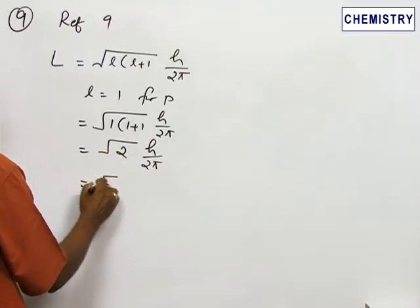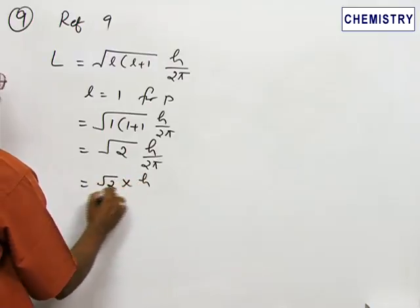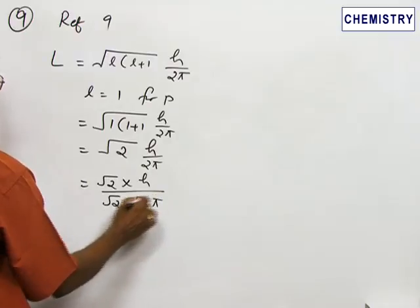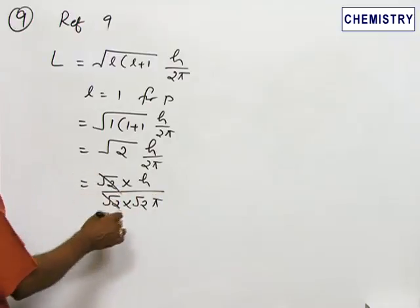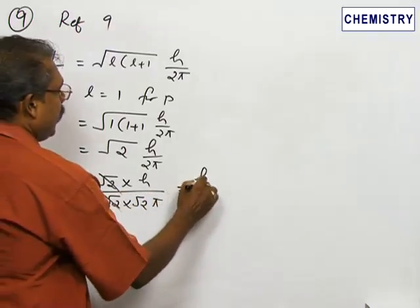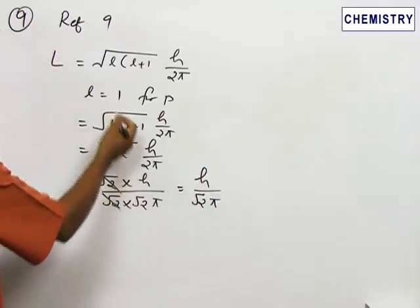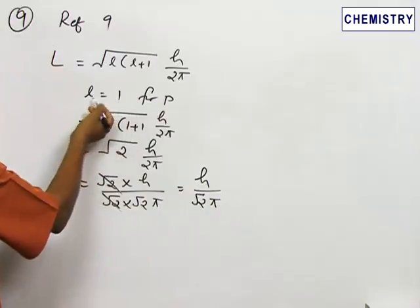This can be rearranged: root 2 into H divided by root 2 again into root 2 by π. So these two get cancelled. Now we have H by root 2π, and here for P orbital you can take 1.